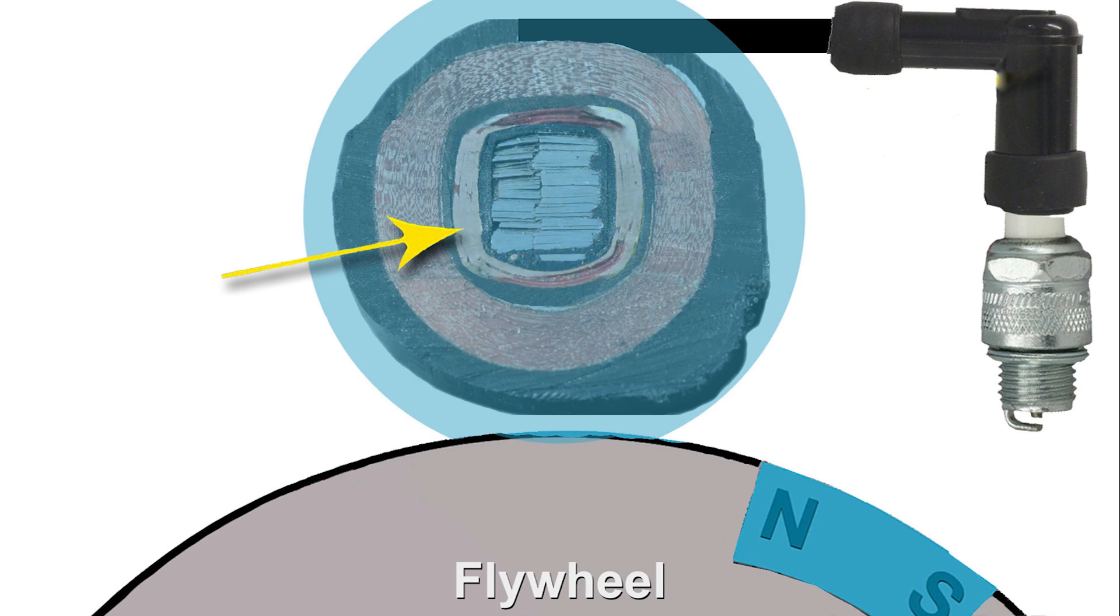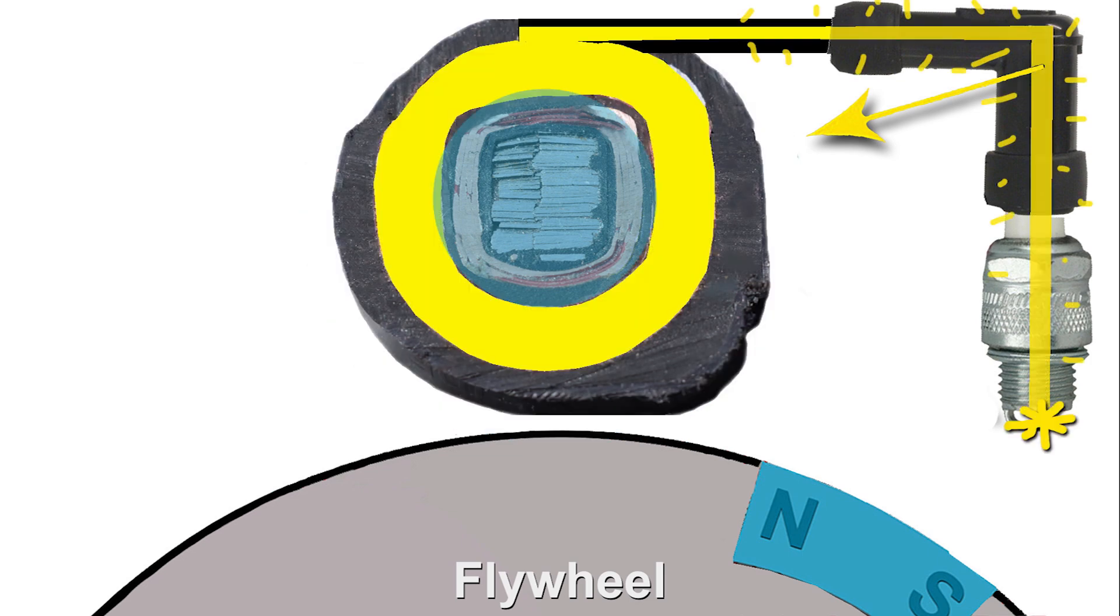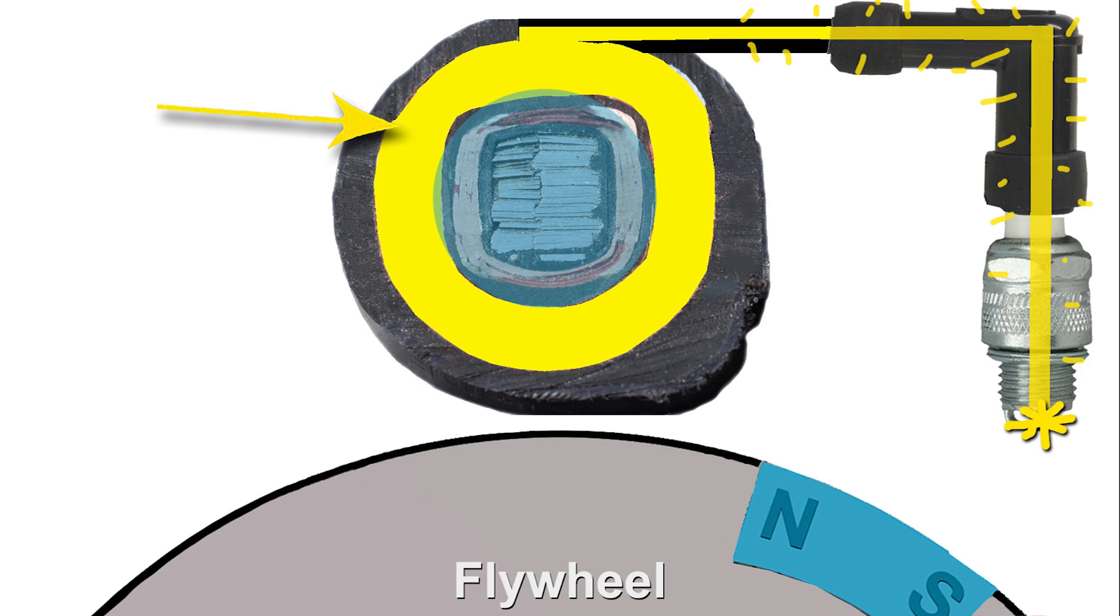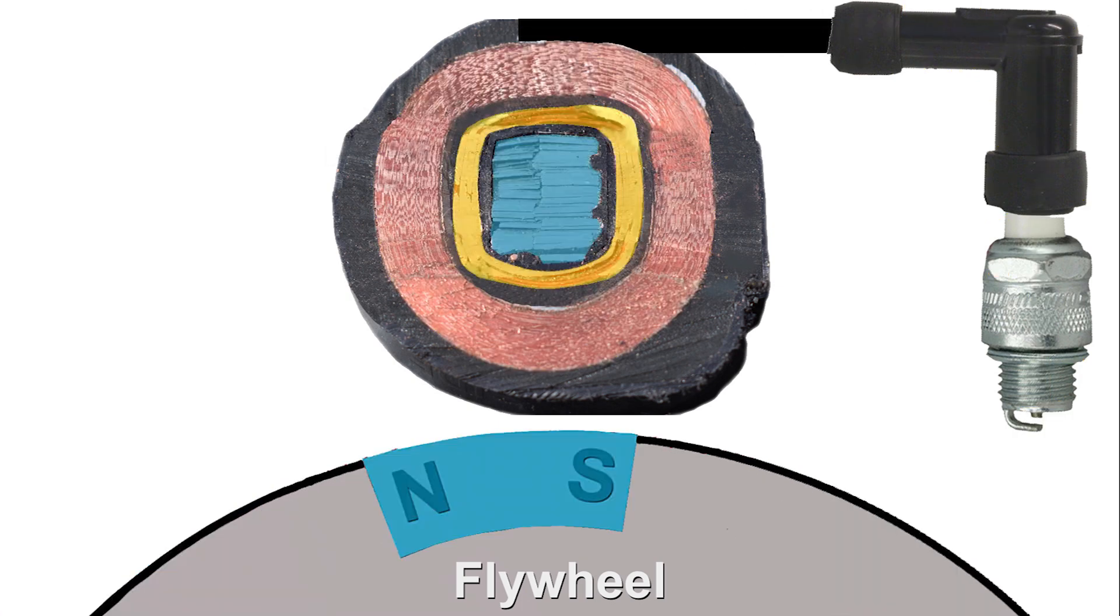As long as those electrons are excited and moving in one direction, this electromagnetic field exists. So when the magnet has passed by, the electrons in the primary coil are no longer excited. This causes the electromagnetic field to collapse down to the iron core. As it collapses, the electromagnetic field passes the secondary coil at near the speed of light.